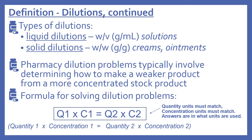This is our formula for solving dilution problems: Q1 times C1 equals Q2 times C2. You'll want to memorize this. Q1 is quantity one, multiplied by concentration one, and that equals quantity two times concentration two. When we know three out of the four variables, we can solve for the one we need. The quantity units must match — if it's grams, both Q1 and Q2 must be in grams. The concentration units must also match — if the concentration is a percentage, both C1 and C2 must be a percentage, or if they're in milligrams, both must be milligrams. The answer will be in whatever units are used.